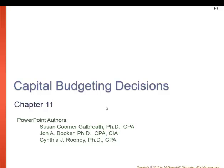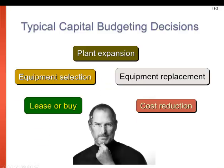Hi students, this is Capital Budgeting Decisions for Chapter 11. In the prior chapter, we were introduced to the master budget process. We budgeted for sales, production, direct material purchases, cash, and a handful of other things. In this chapter, we will look at Capital Budgeting Decisions.